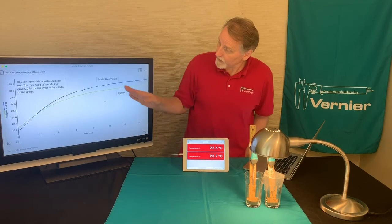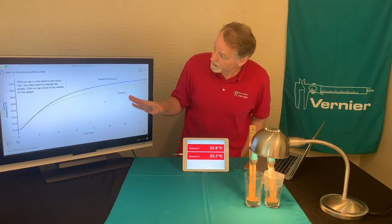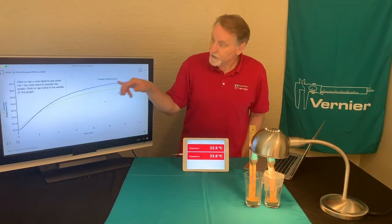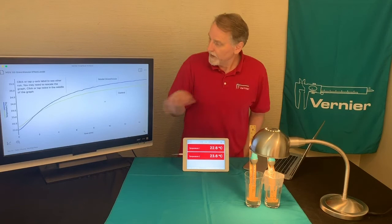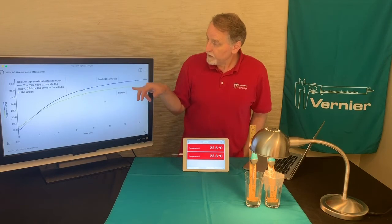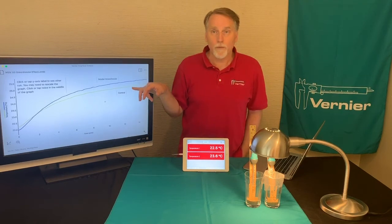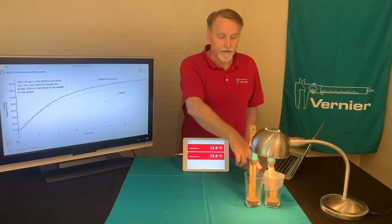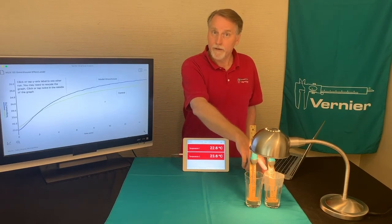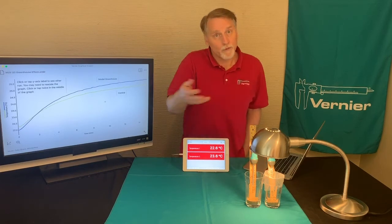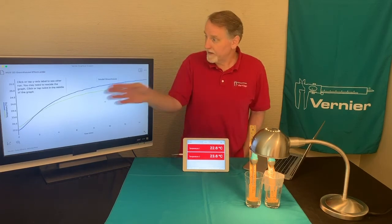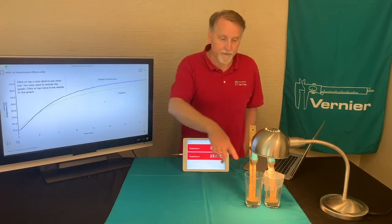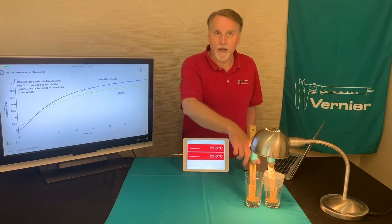Here's the data. The upper curve is the model greenhouse, and the other one is the control. We see that indeed, the greenhouse was warmer at the end of the collection — they started off about the same, but then it ended up being warmer.